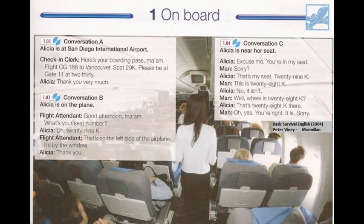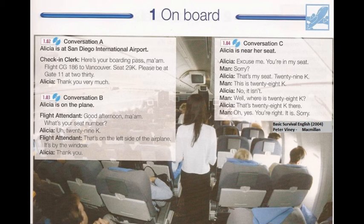1.6. Good afternoon. Cross-Globe Airways flight CG-185 to Vancouver is now ready for boarding. We are boarding the airplane in sections. Please have your boarding passes on hand. Passengers with small children and passengers with difficulties can board now. Next, rows 39 through 56. Next, rows 20 through 38. Next, business class passengers in rows 6 through 19. Finally, first class passengers in rows 1 through 5.